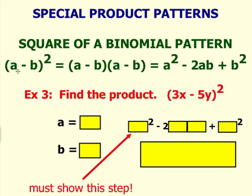So, when you have a binomial a minus b squared, when you write it out, it is a minus b times a minus b.